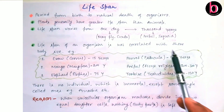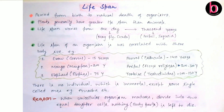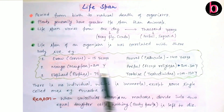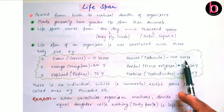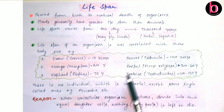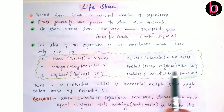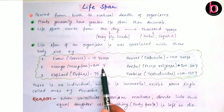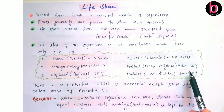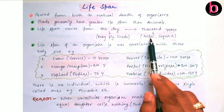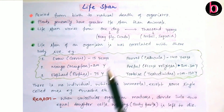An important point is that life span is not correlated with body size. For example, crow and parrot are nearly the same in body size, but the crow's life span is about 15 years while the parrot's is 140 years. Similarly, mango and Peepal trees are similar in size, but mango lives nearly 200 years while Peepal can live 200 to 300 years or even over a thousand years.